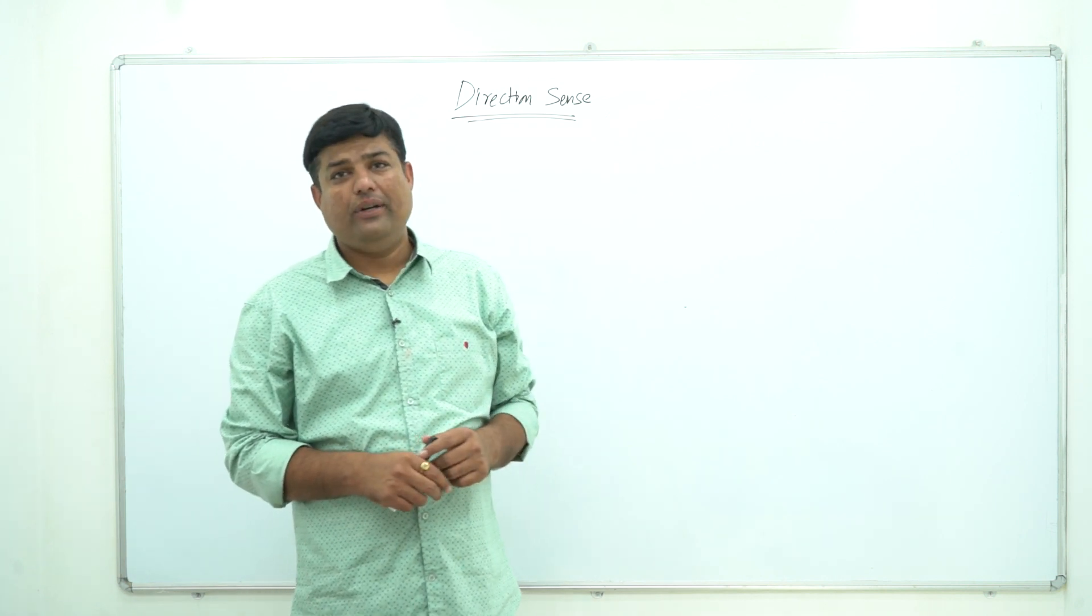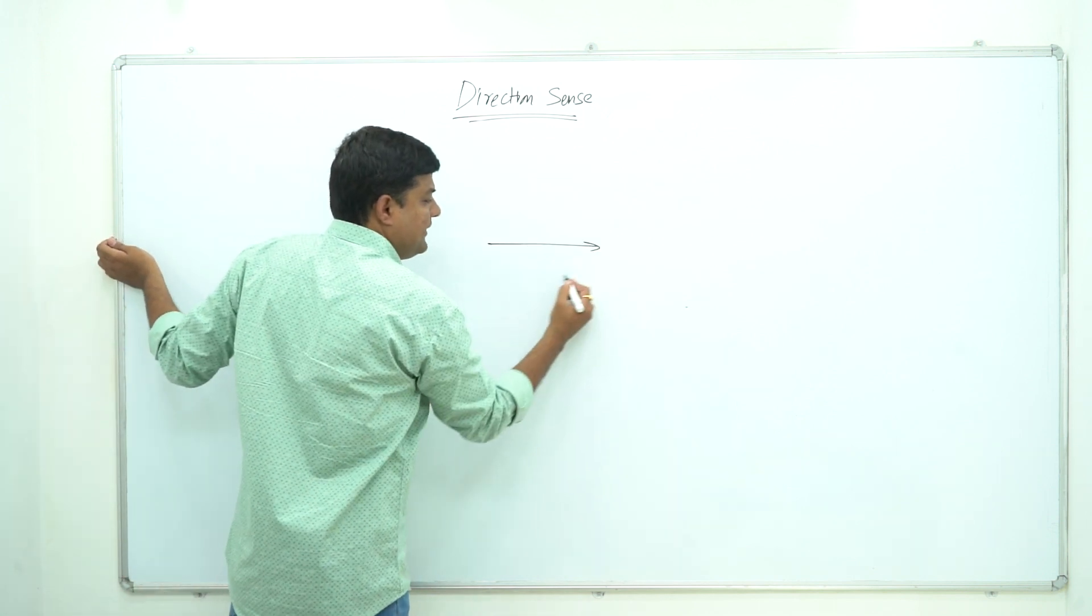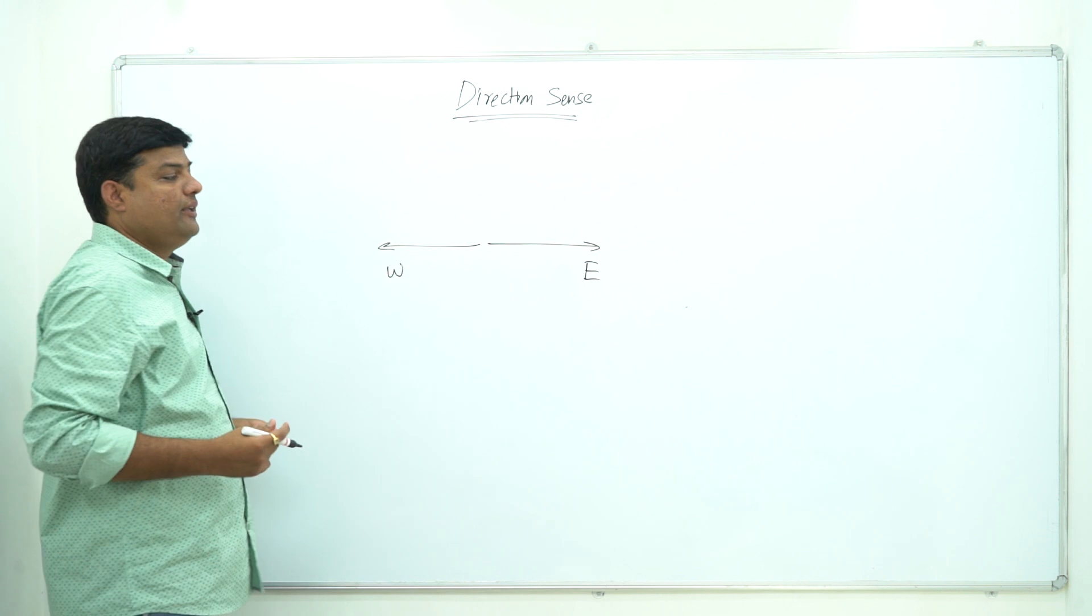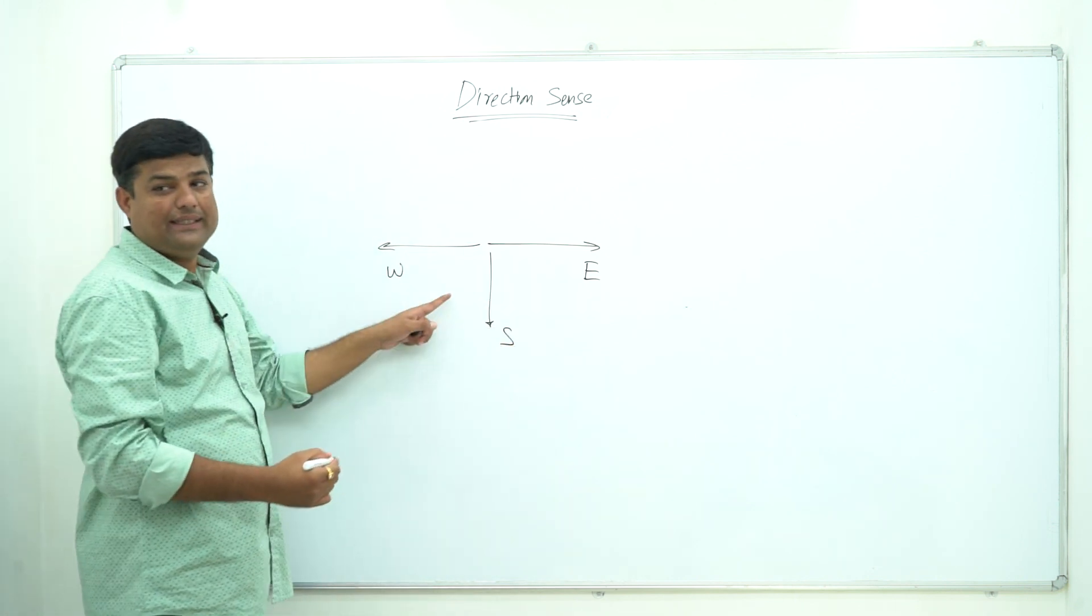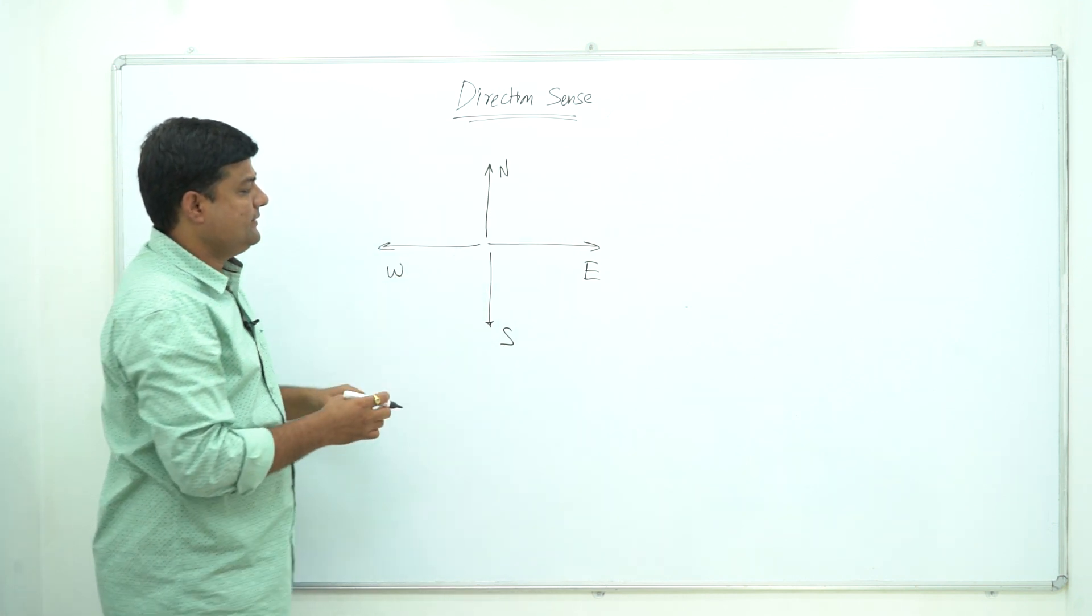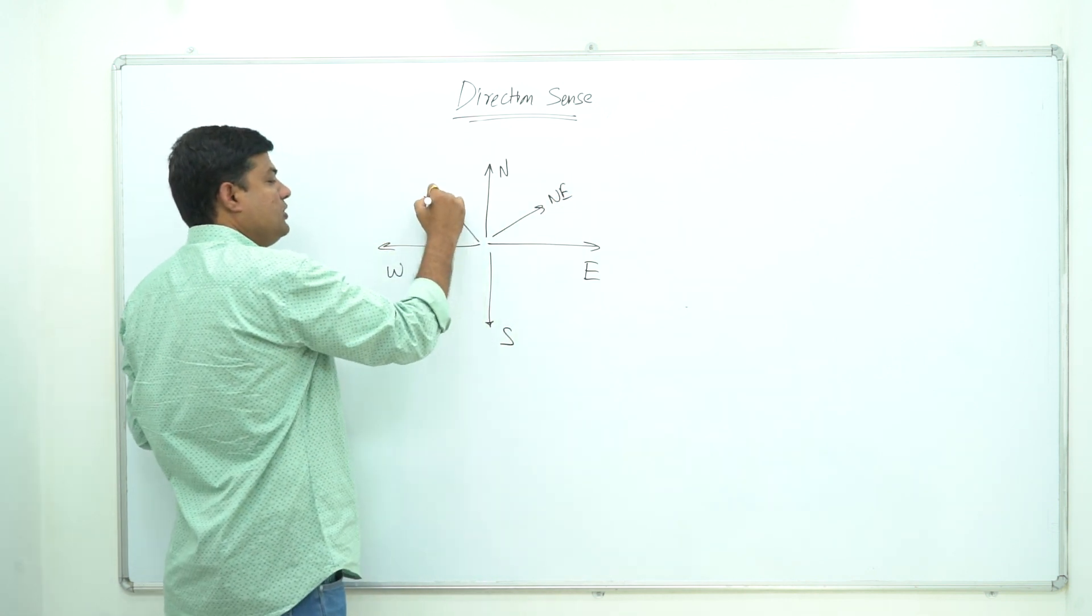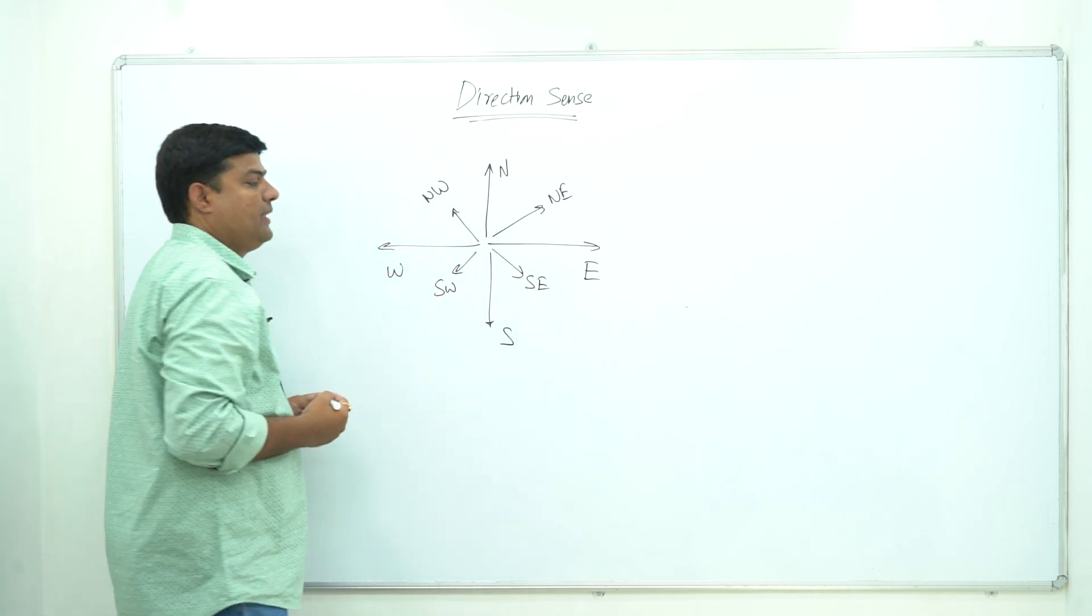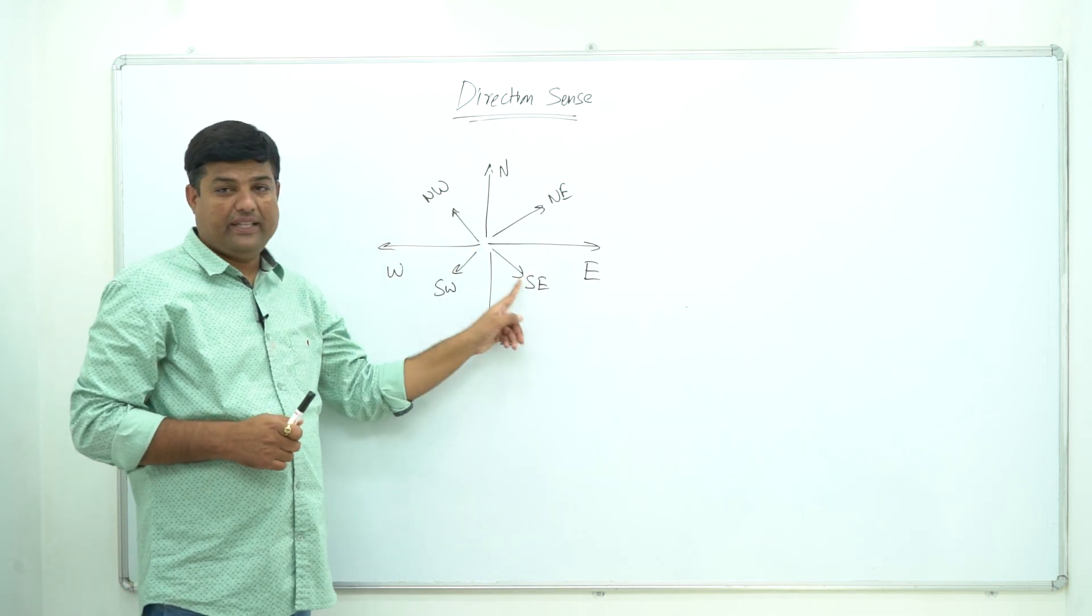So let's try to see the basics of our Direction Sense. This is said to be east, this is said to be west. Now this is said to be south, this completely said to be south and this is said to be north. And this we call as northeast. So students, these are the four main directions and these are the four sub-directions.